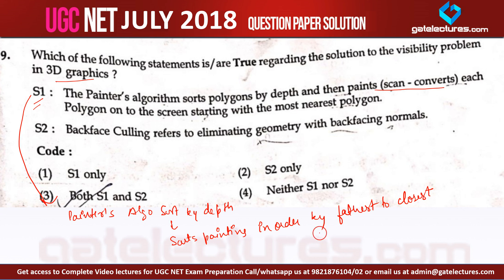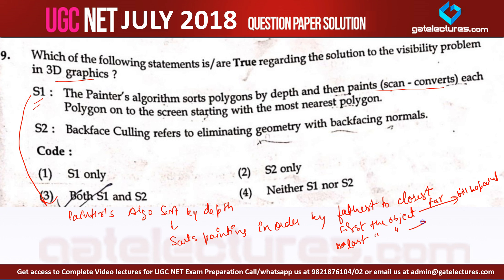So let me clarify: the object that is far will be painted first, then at last the object that is near will be painted — near meaning closer to the eye or nearer to the viewer. So here, statement number 1 is actually false, because it claims painting starts from the most nearest polygon, which is incorrect.